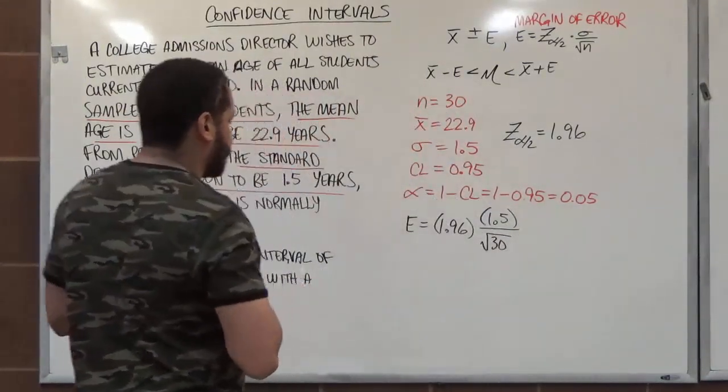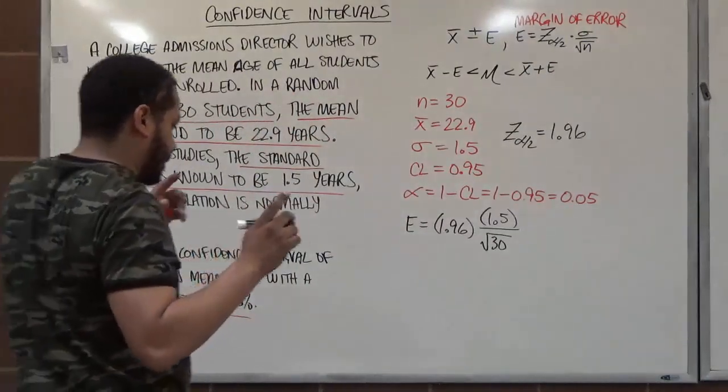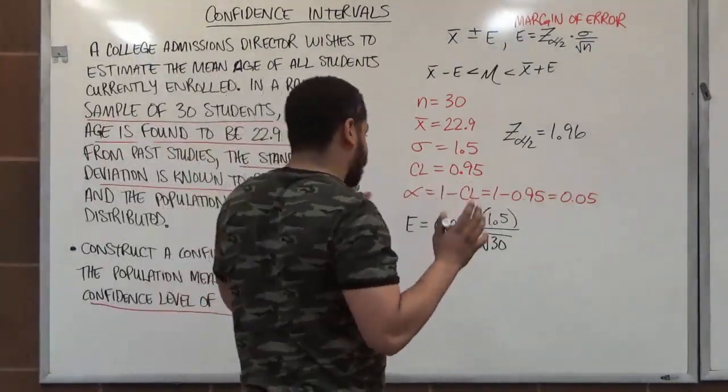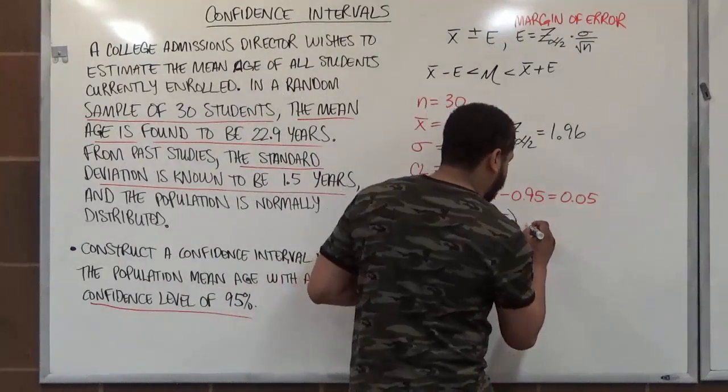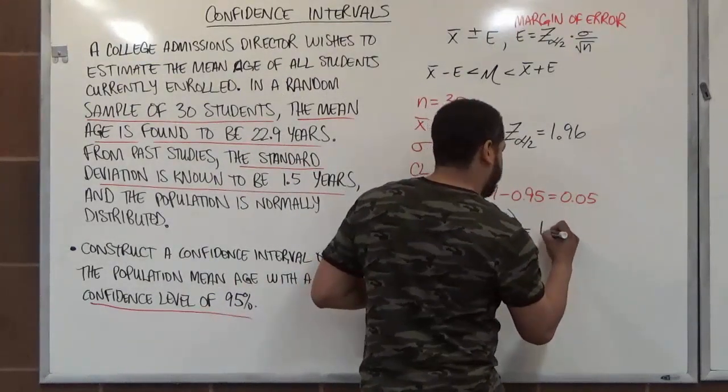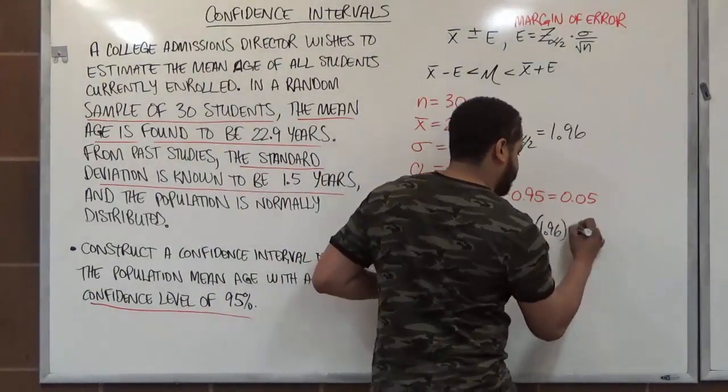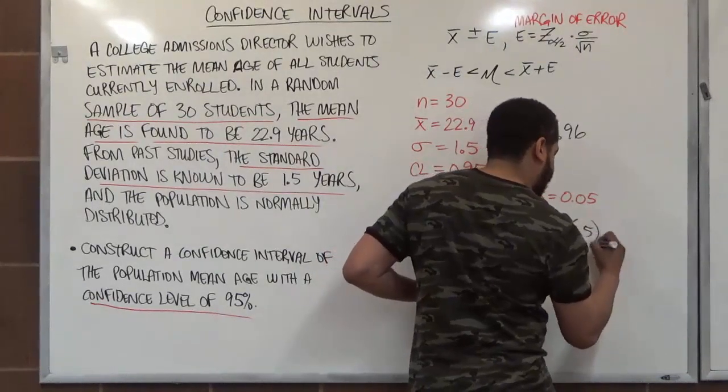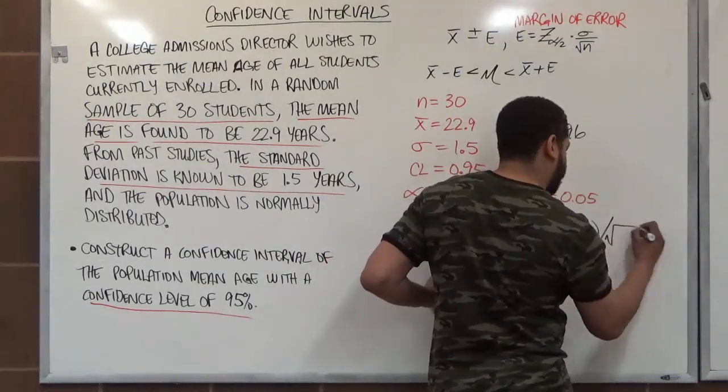Now to set this up easier for those of you who are at home and you have to use your calculator to calculate this, a lot of times we get confused on how to do this correctly. Let's set this up horizontally. So we have 1.96, parenthesied, 1.5, parenthesied, divided by the square root of 30.